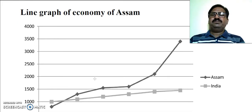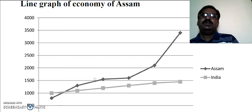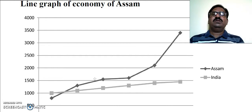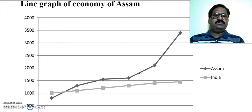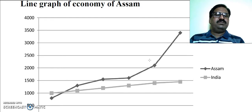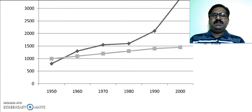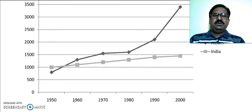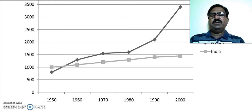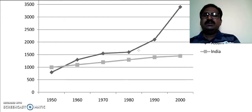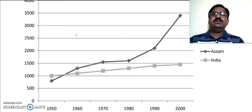You can see this line graph showing the economic growth of Assam. The dark line represents the economic development of the state of Assam during 1952 to 2000. The trend starts at around 1,000, then near about 1,500, then 1,500 again, then above 2,000, and then 3,500.